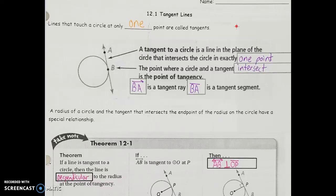The big focus in chapter 12 is all about circles, and in the first section, 12-1, we're going to restrict that to just look at tangent lines — lines that touch a circle at only one point. That's what we call tangents. Line AB, for example, touches the circle and intersects it only at point B. It doesn't touch before, it doesn't touch after, just that single point, so we'd call that a tangent line to a circle.